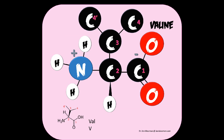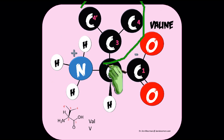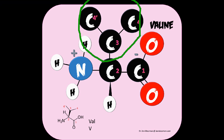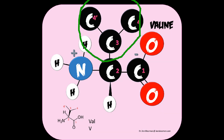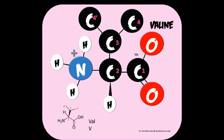The next hydrophobic amino acid is valine, and it is beta-branched. You have the central alpha carbon, then the first carbon bound on the R-chain is the beta-carbon, and at the beta-carbon is where we have a branch. If you look at this R-chain, it is in the shape of a V — which also happens to be the one-letter code for valine.